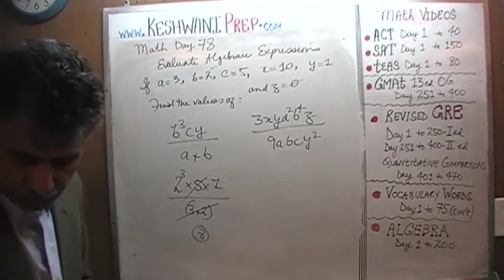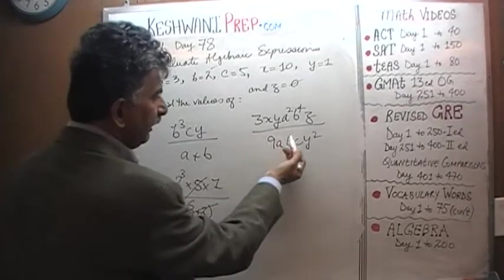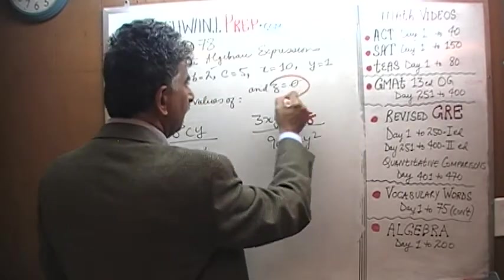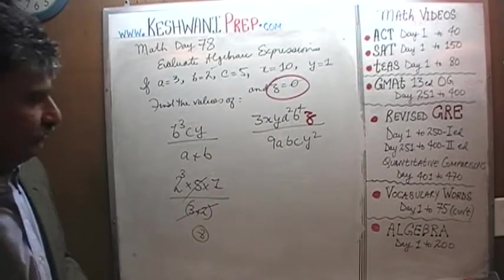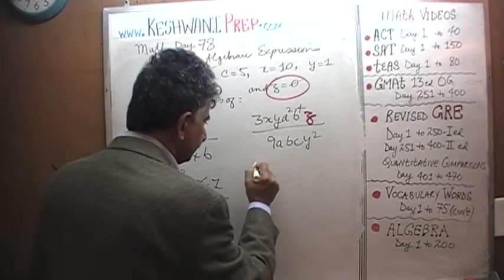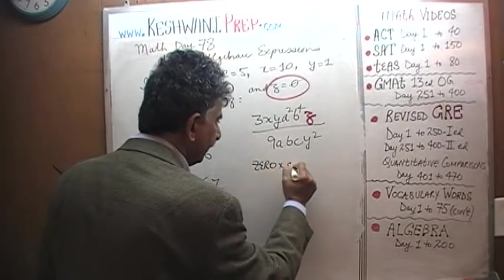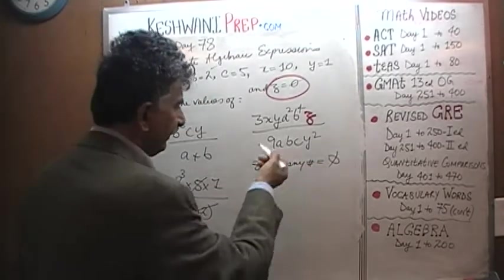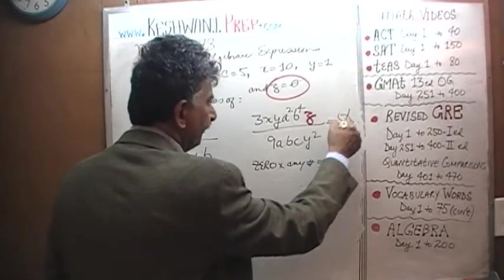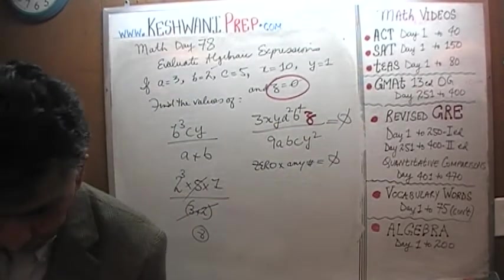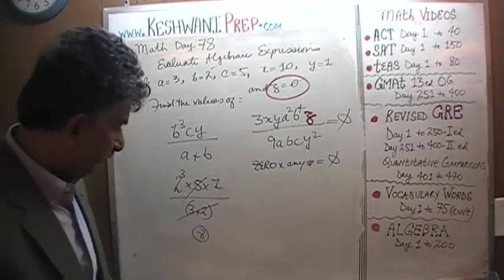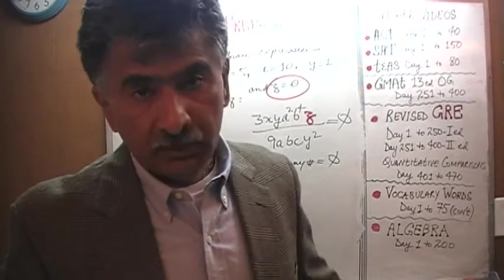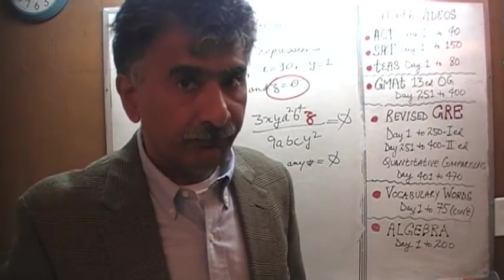And finally here we notice that it's a very complicated expression but it has a Z in it which is a zero, and we know that zero times any number of course equals zero. It doesn't matter what the rest is. Regardless of what the rest of the quantity turns out to be, times zero is going to be zero. I'll see tomorrow, okay bye now.